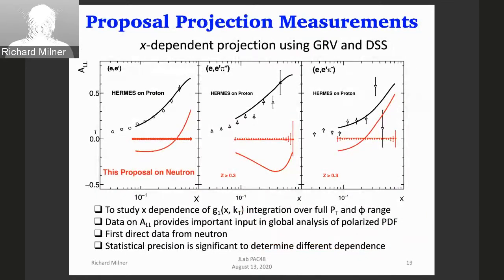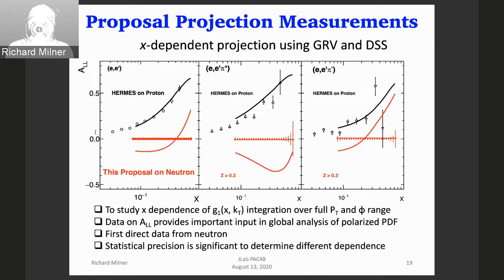The projections for the x-dependence use standard assumptions about parton distributions and fragmentation. We show Hermes data for comparison, and the projected error bars are really small — integrating over PT and phi — coming from the amazing statistical precision.